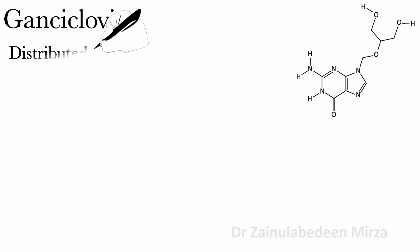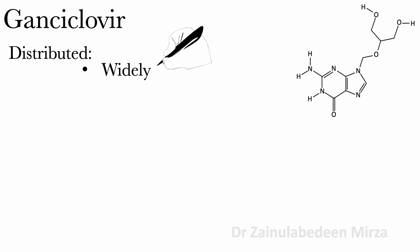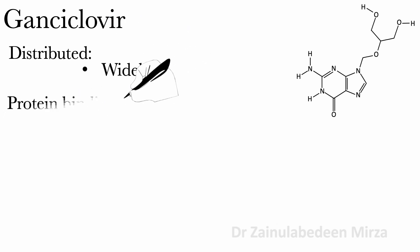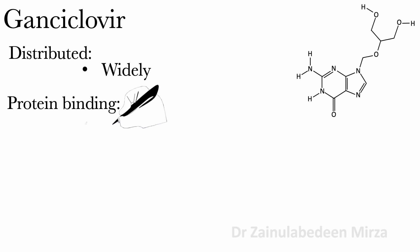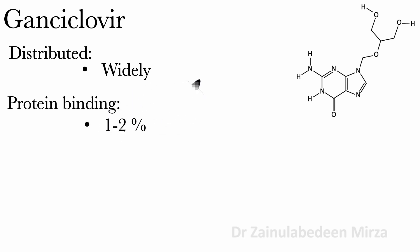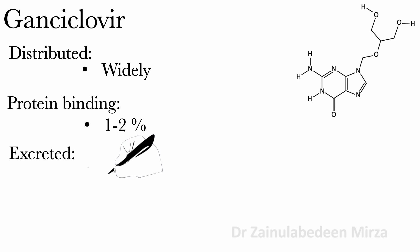GAN Cyclophere is widely distributed. Protein binding of GAN Cyclophere is about 1 to 2 percent. And it is excreted in urine.